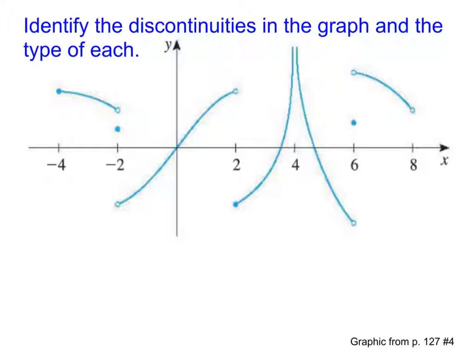So here's a graph, and again, you don't have to copy the graph down now. If you wanted, you could make note of where you could find it in the book in case you want to reference back to that later. But please identify any and all discontinuities in this particular graph and tell me what type each of them is.